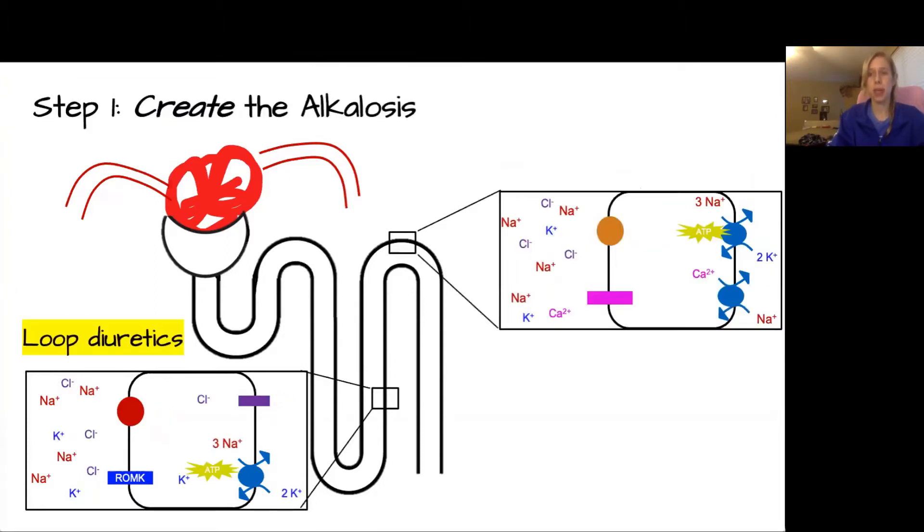Now let's introduce some diuretics to the picture, starting with loop diuretics. Loop diuretics work by blocking that important NKCC pump that we talked about earlier. And thiazide diuretics work on the other big pump we talked about, the sodium-chloride co-transporter in the distal convoluted tubule.